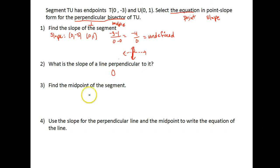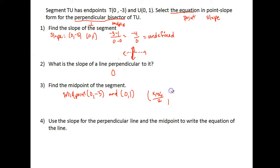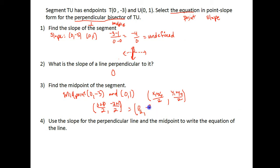Now let's find the midpoint of segment TU so that we have a point to use. The midpoint is perfect because it goes through the center of the line, which is what the perpendicular bisector needs to do. For midpoint, we add x1 and x2 and divide by 2 for the x-coordinate, and add the y's and divide by 2 for the y-coordinate. That gives us 0 plus 0 over 2, and negative 3 plus 1 over 2 — which simplifies to (0, -1).